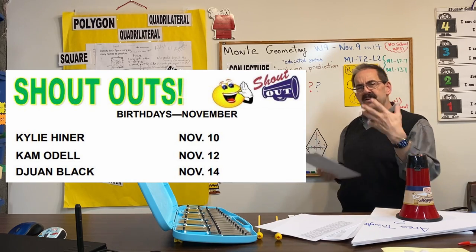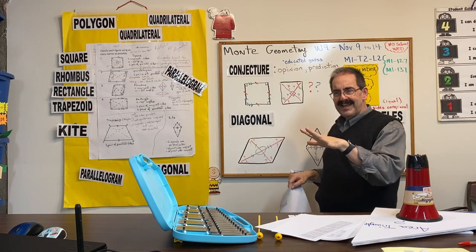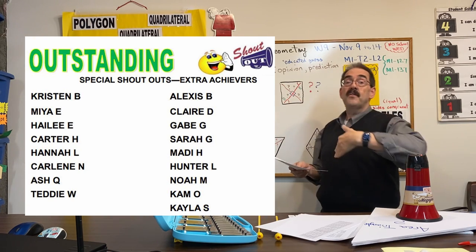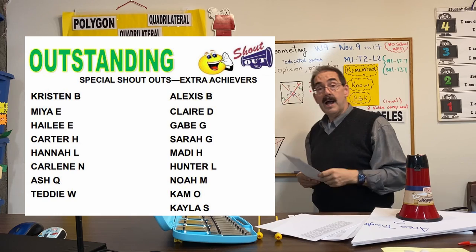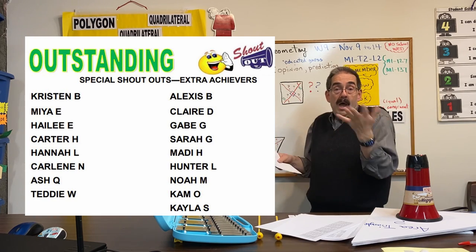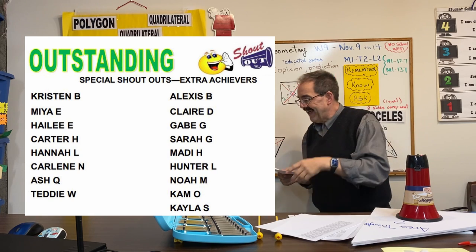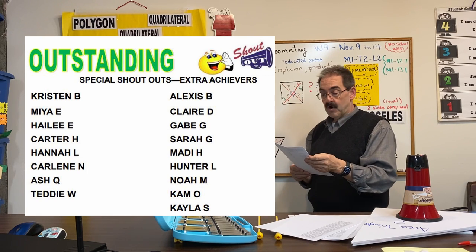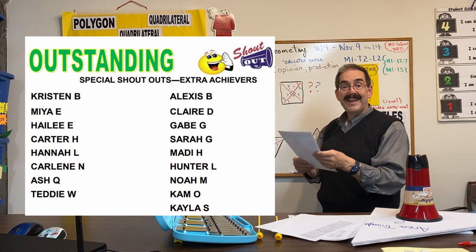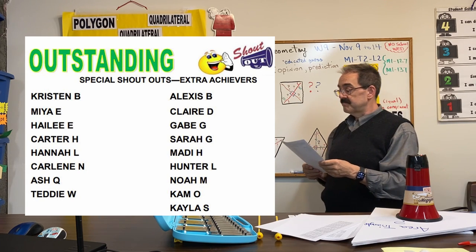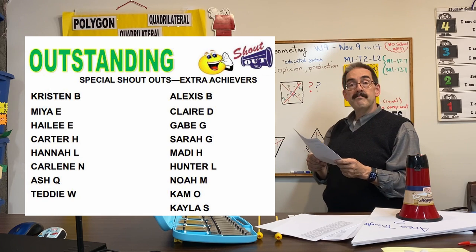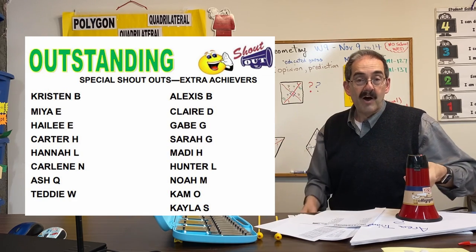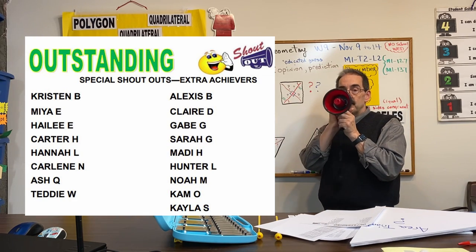And then the extra achievers. Those people that come early to class. They stay late in class. They're offering their extra help. They're willing to chat, give examples. And then the folks that come to access time afterwards. I appreciate all of your input because it helps me know what I need to focus on most. And those shout-outs are going to be in period four: Kristen B., Maya E., Haley, Carter, Hannah, Carlene, Ash, and Teddy. In period five, Alexis B., Claire D., Gabe, Sarah, Maddie H., Hunter, Noah, Cam, and Kayla. I appreciate all of the efforts by all of you folks each and every week. So those are our shoutouts.